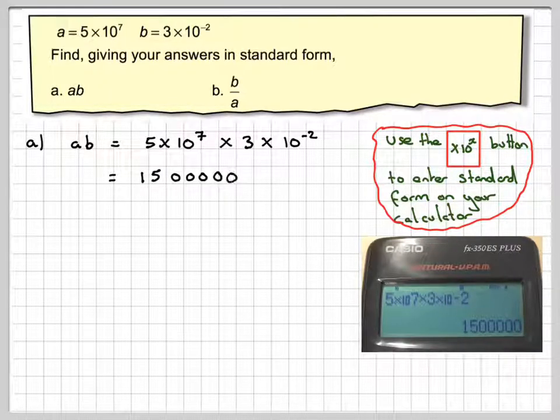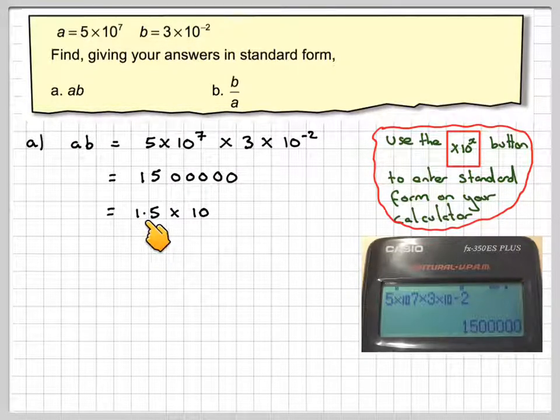So if you do that you're going to get 1,500,000. Now you're asked to write your answer in standard form. So the standard form means that this number here must be between 1 and 10.